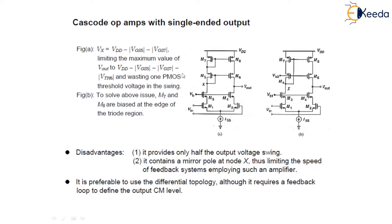The two disadvantages of this particular circuit are: first, it provides only half of the output voltage swing; and second, it contains a mirror pole at node X, which limits the speed of a feedback system which employs such an amplifier. So it is preferable to use the differential topology, although it requires a feedback loop to define the output CM level.